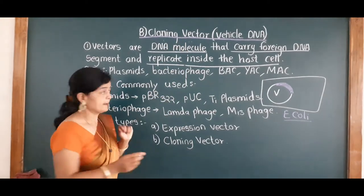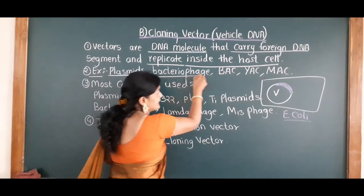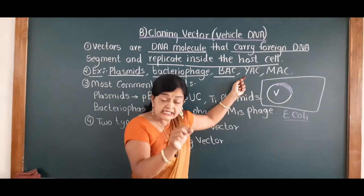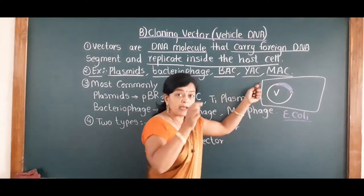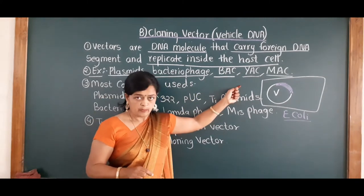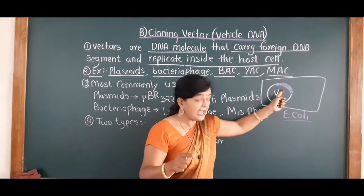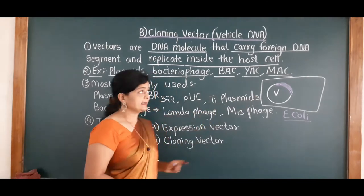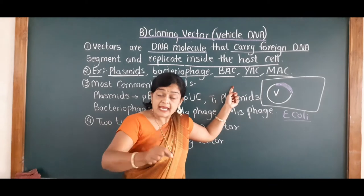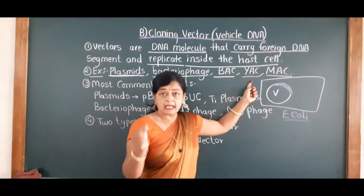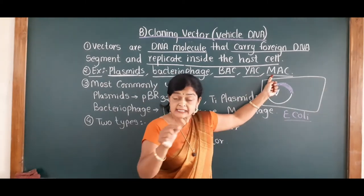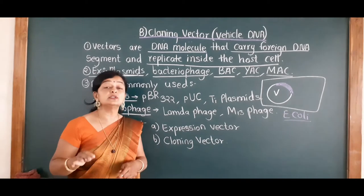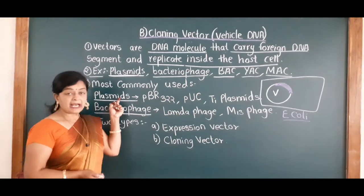I will take a few examples of vector. Plasmids can be vectors. Bacteriophage — meaning viruses — can be vectors. BAC, meaning bacterial artificial chromosome, can be a vector. YAC, meaning yeast artificial chromosome, can be a vector. MAC, meaning mammalian artificial chromosome, can be a vector. These are a few examples of vectors. Many vectors are there, but generally scientists commonly use plasmids and bacteriophages only.